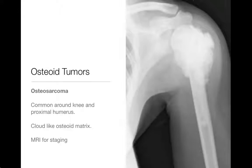First up, osteoid tumors. Probably the most important and certainly one of the more common osteoid tumors in kids and young adults is going to be osteosarcoma. Osteosarcoma is a nasty tumor — it's a scary, very aggressive tumor, and it's certainly one of the more common primary bone tumors of kids and young adults.